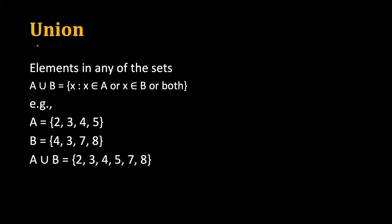The second operation is union, and its symbol is just the opposite of intersection. Union means elements which are present in either A or B — if an element is present in A or B, we include it in the union.